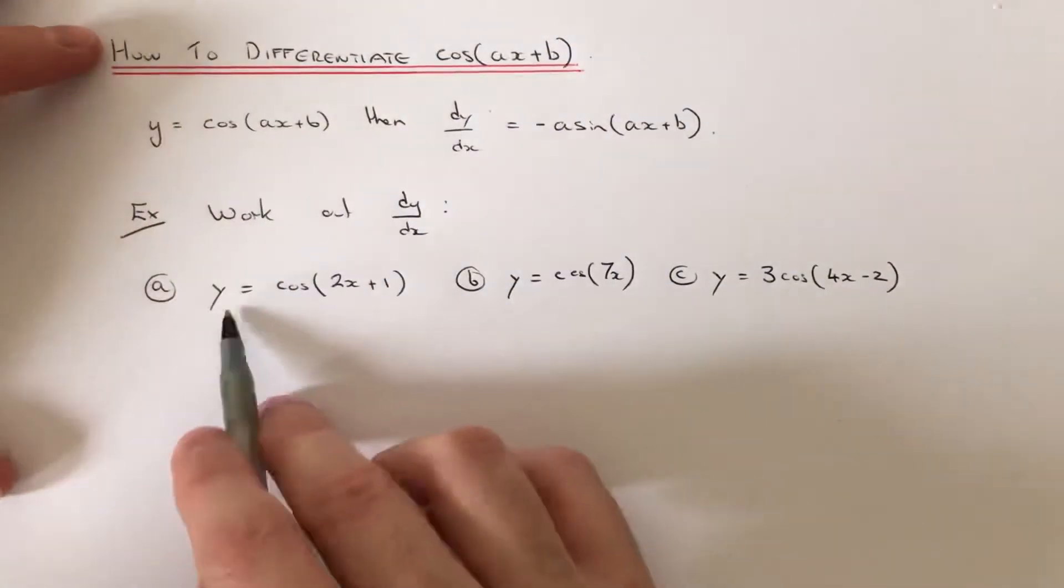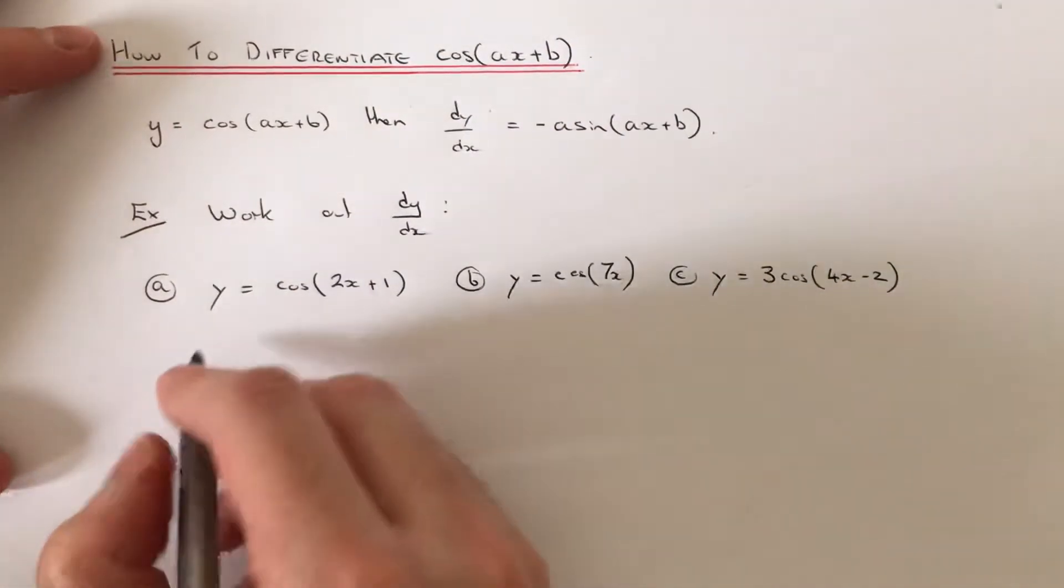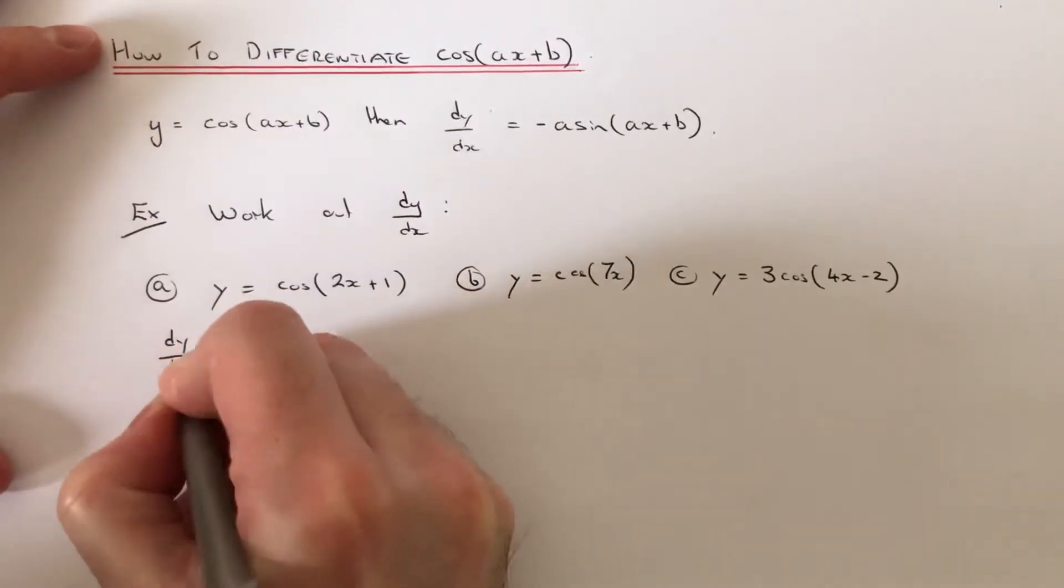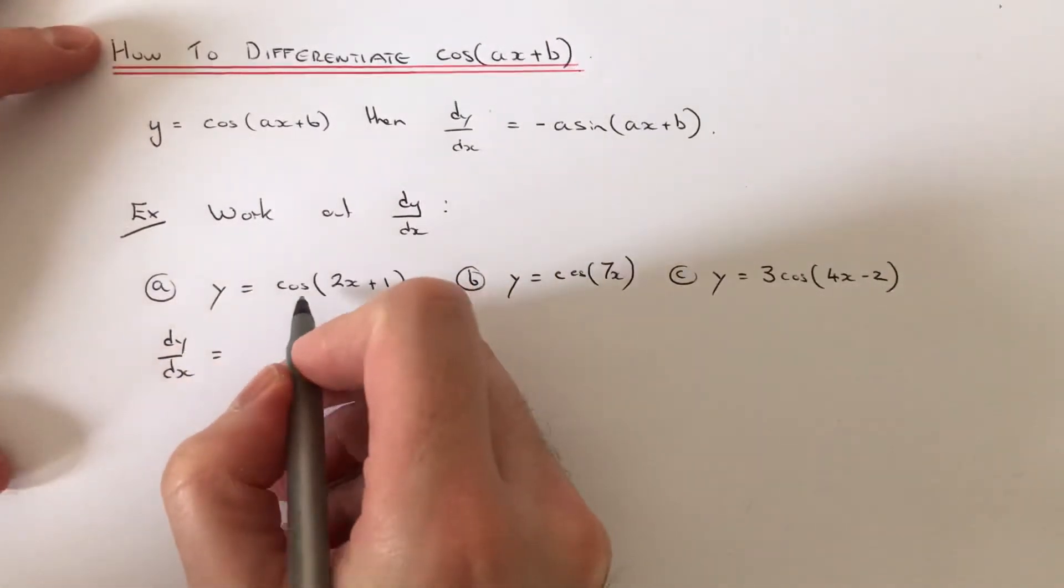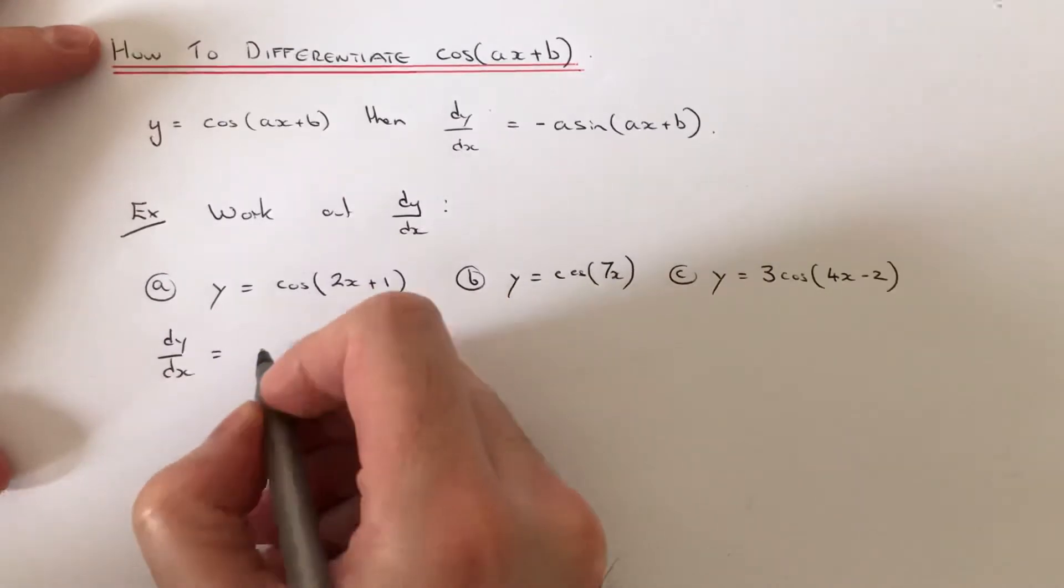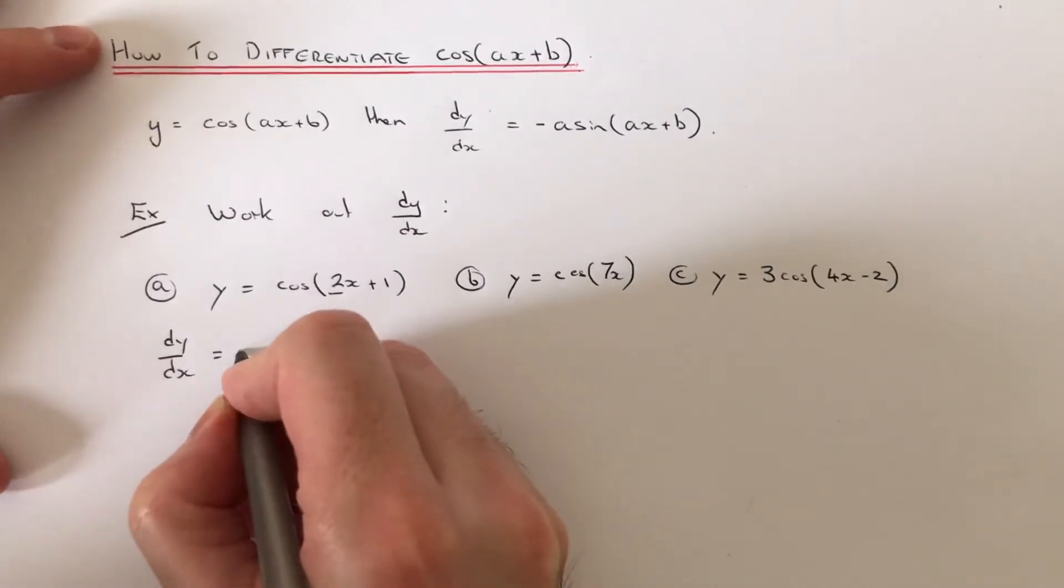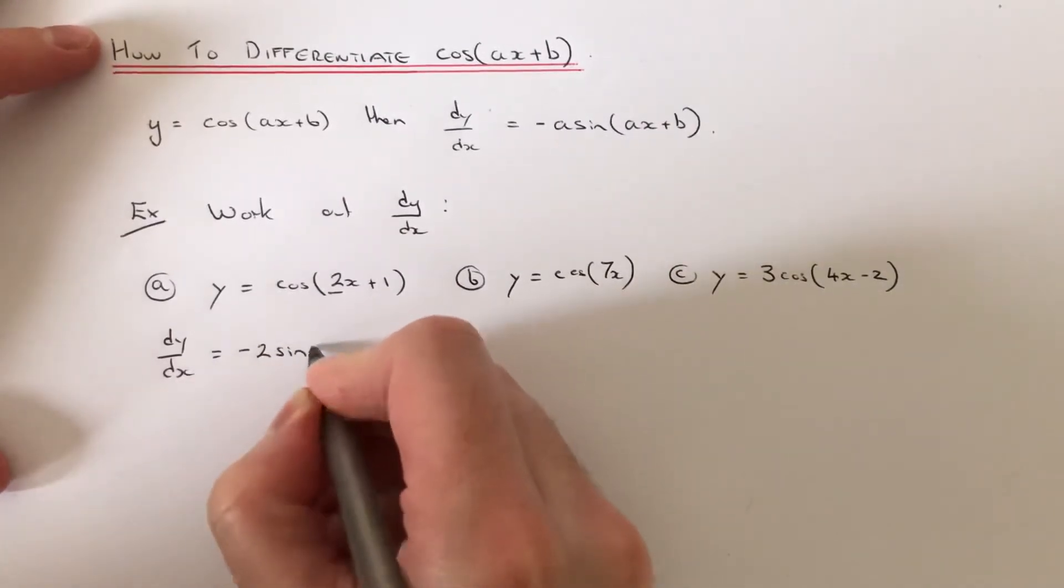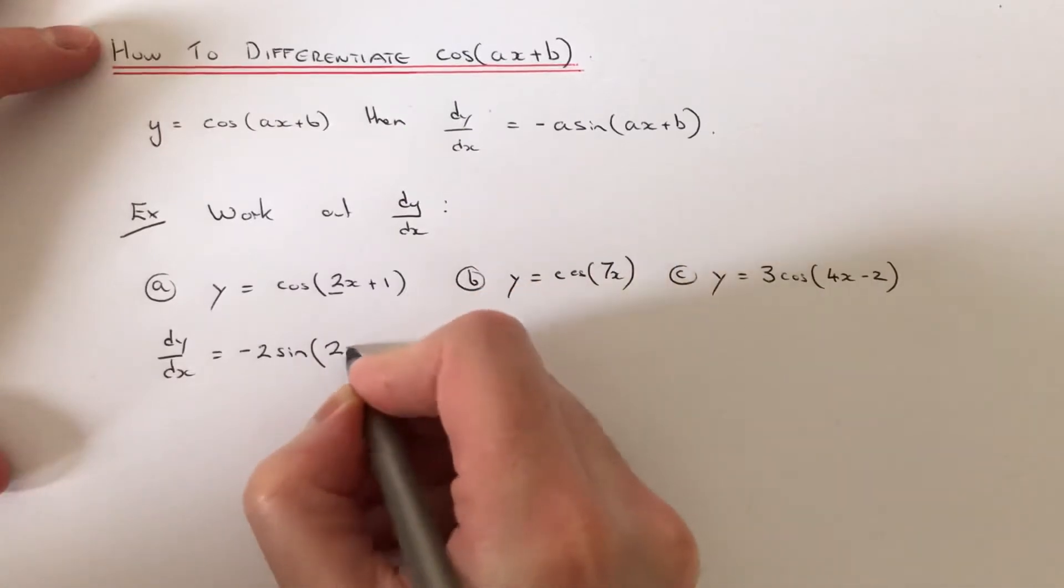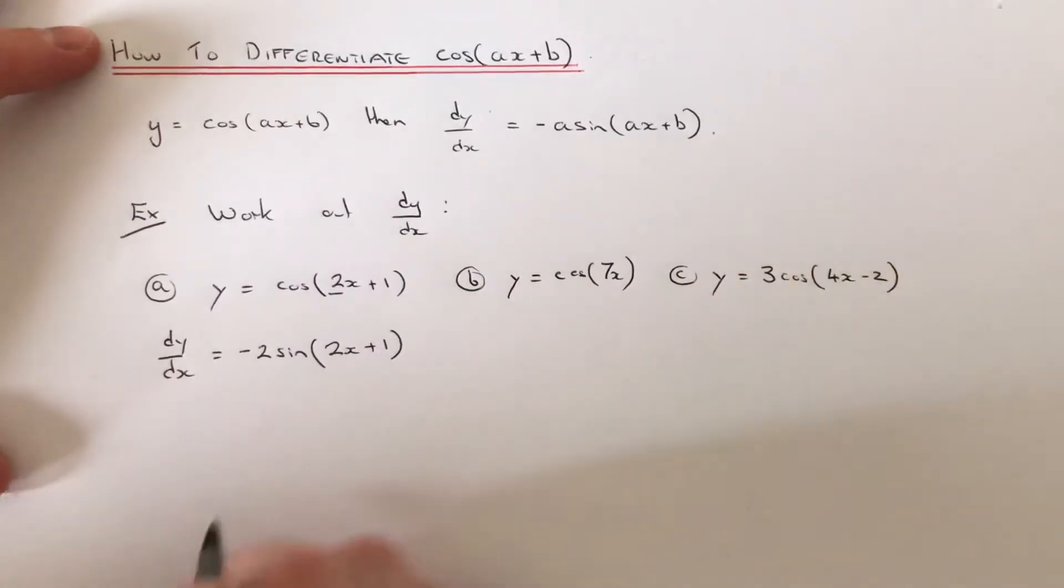The first one is y equals cos(2x+1). We know that cos goes to minus sine and we're going to multiply the front of it by the number before x, which is 2. So that would be minus 2 sine(2x+1), and keep this bit in the bracket the same. That's all there is to it.